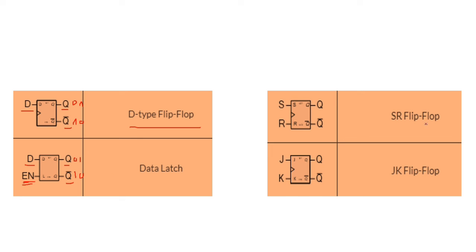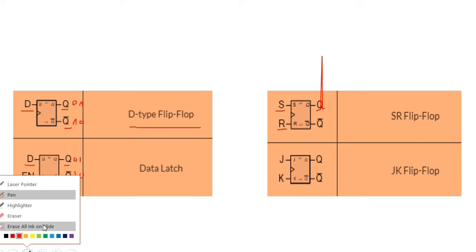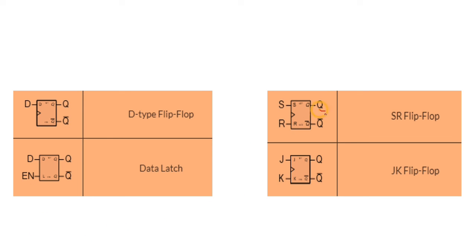Here we have the SR flip-flop. We have two inputs, S and R, and we have two outputs — always two outputs — Q and Q-bar. The same principle applies: if Q is zero, Q-bar will be one; if Q is one, Q-bar will be zero.